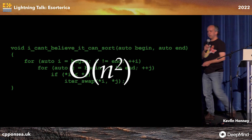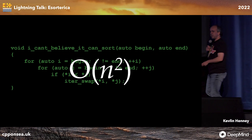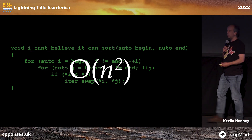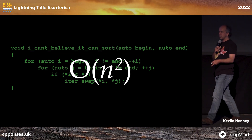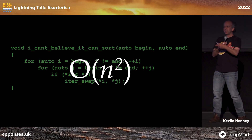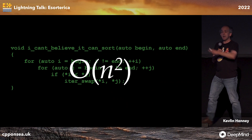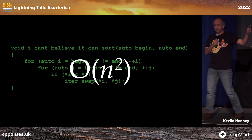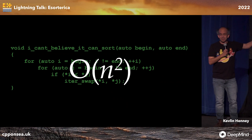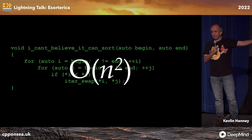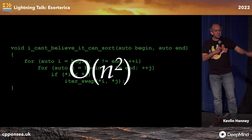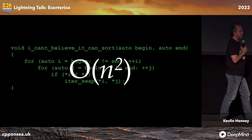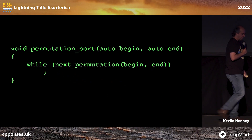Importantly, it's O(N²), and there's none of this vagueness. People say, oh, well, bubble sort — worst case, best case. No, it's always O(N²). It is utterly deterministic. There's none of this uncertainty. This is the opposite of quantum computing.